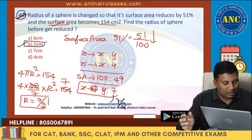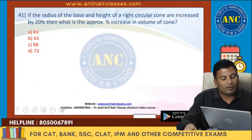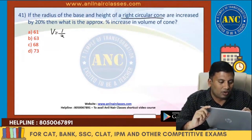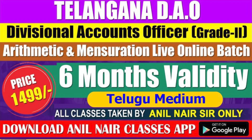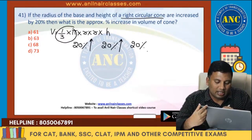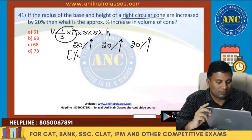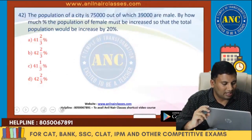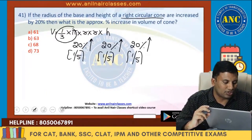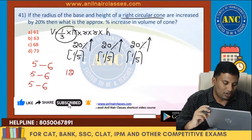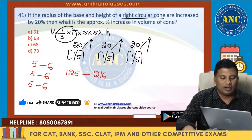41st question: If the radius of the base and height of a right circular cone are both increased by 20%, the volume formula is (1/3)πr²h. A 20% increase means the ratio goes from 5 to 6 — that is, a '5→1 increase'. So volume ratio goes from 5³ = 125 to 6³ = 216.